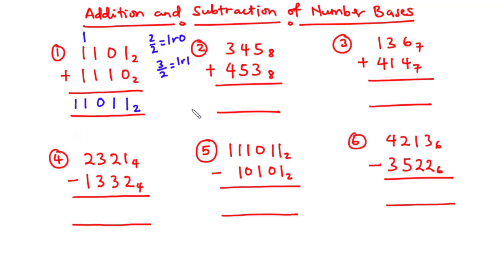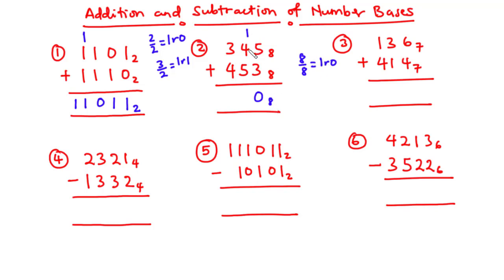Now for the second example, we are working in base 8. 5 plus 3 is 8. Because we have 8, we can't write it, so we divide 8 by base 8 and get 1 remainder 0. We write the remainder 0 and carry the 1. Then 1 plus 4 is 5, and 5 plus 5 is 10.